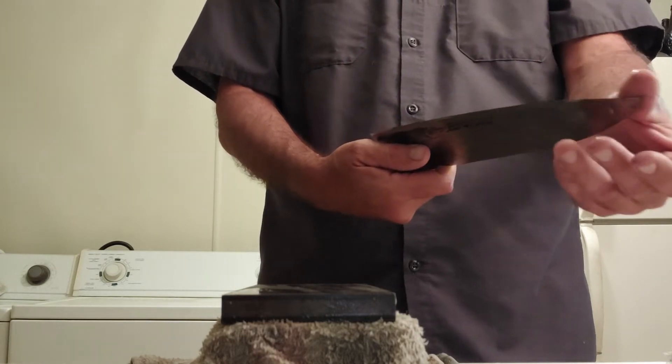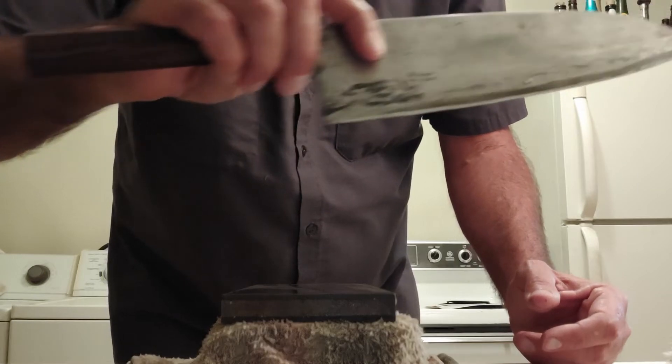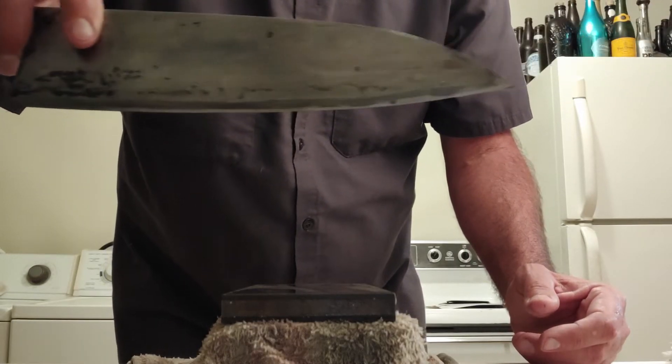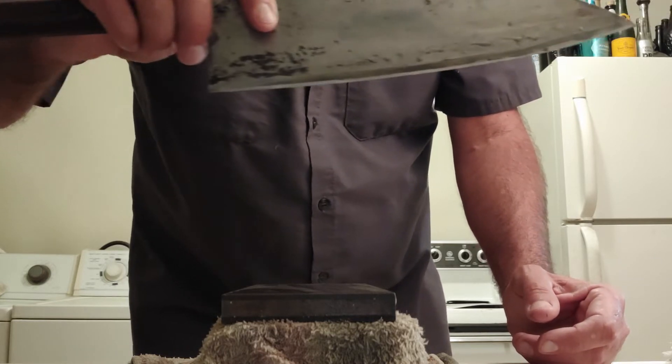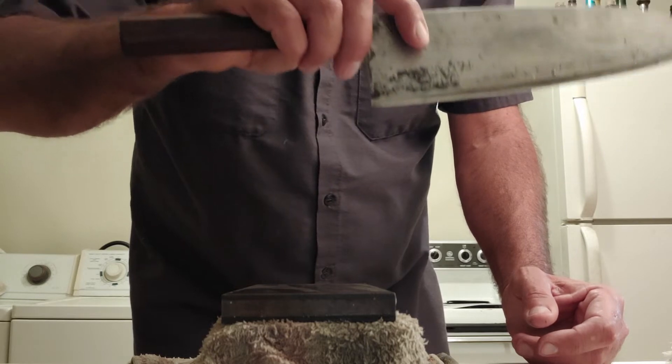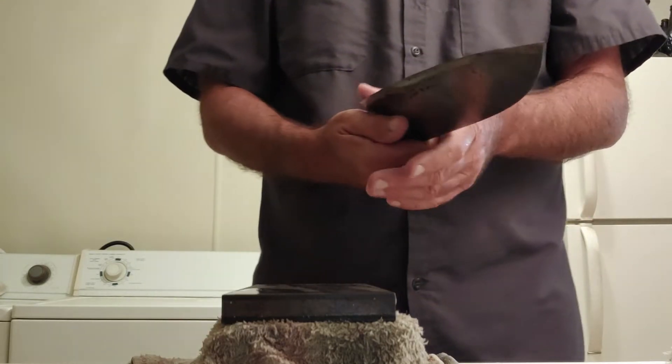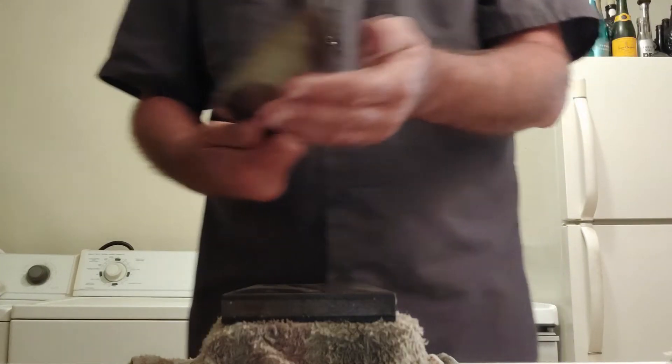So already getting a good result. And you can already see that one really cool thing about these resin bonded diamond stones is that they will actually cloud the soft iron. Unlike a diamond plate which will leave the whole thing uniformly shiny. So you can already see what kind of finish you're getting. Just on this resin bonded diamond stone, it will already bring out the Kasumi polish a bit.